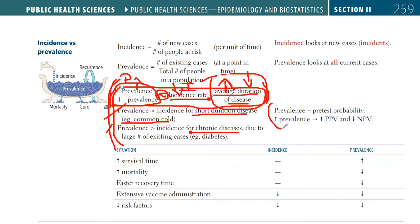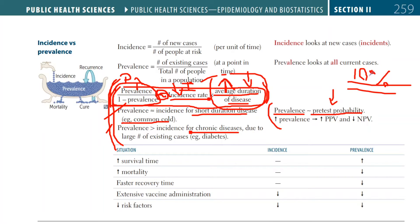Prevalence is very similar to the pretest probability — the probability of having a disease before you get any tests. For example, if the prevalence of iron deficiency anemia in a population is 10%, that means every person who walks into the clinic has a 10% chance of actually having the disease. The prevalence of the disease is 10%, so the pretest probability has to be 10%.